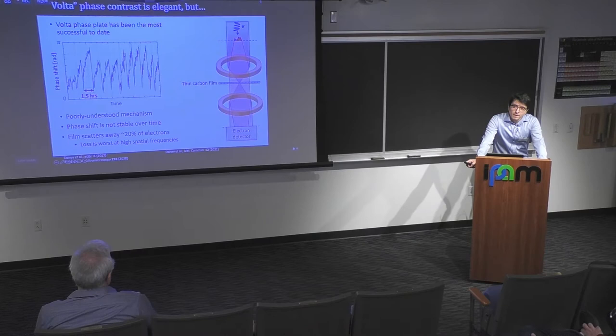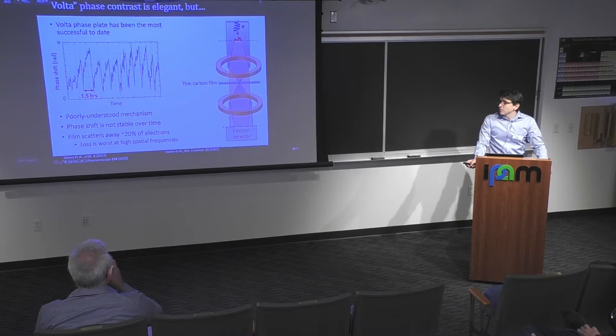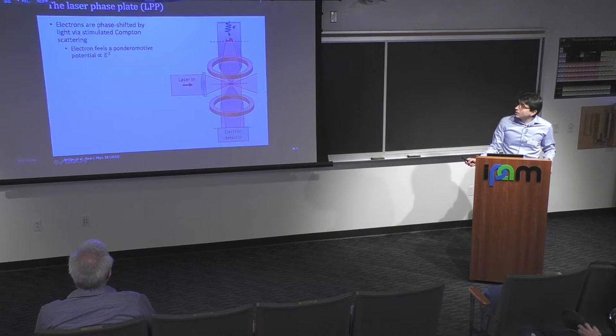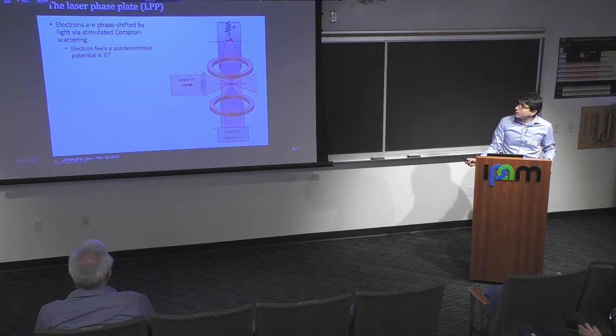The second big problem with the Volta phase plate is that there is quite a bit of scattering of electrons away from the detector — you lose about 20% of your electrons. In cryo-EM we're already dealing with low signal-to-noise, so we really want to keep as many electrons as possible. Our approach in this collaboration between Holger and Bob's groups is to implement a laser phase plate.